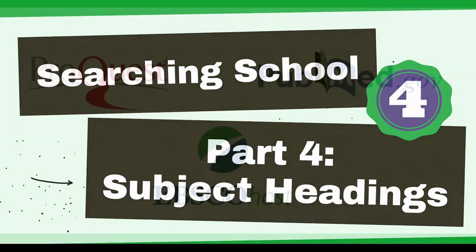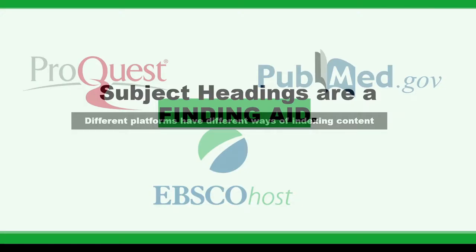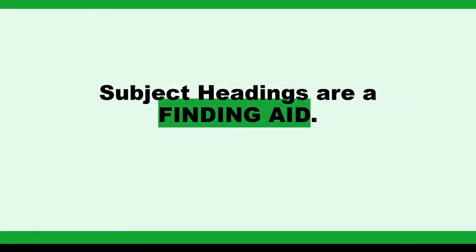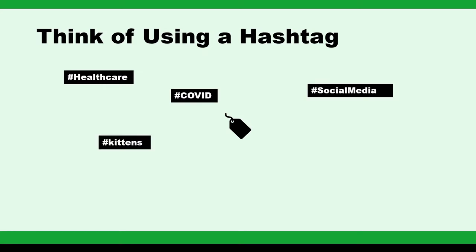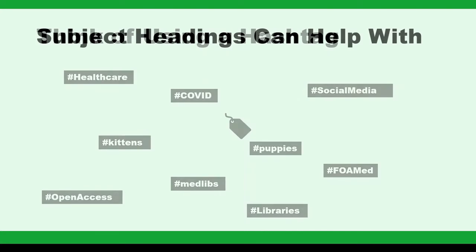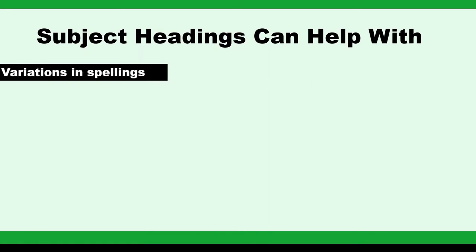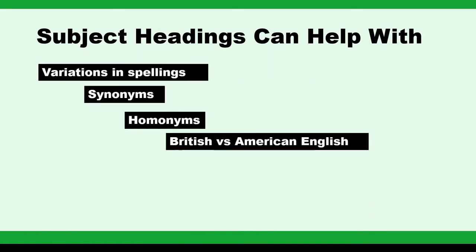Different platforms have different ways of indexing content. They usually use some format of subject heading to make records more findable, despite variations in terminology. Using subject headings is a little bit like using a hashtag in social media. You know how you find that one tag, and you want to see other posts with that tag, so you click on it? That's essentially how subject headings work.